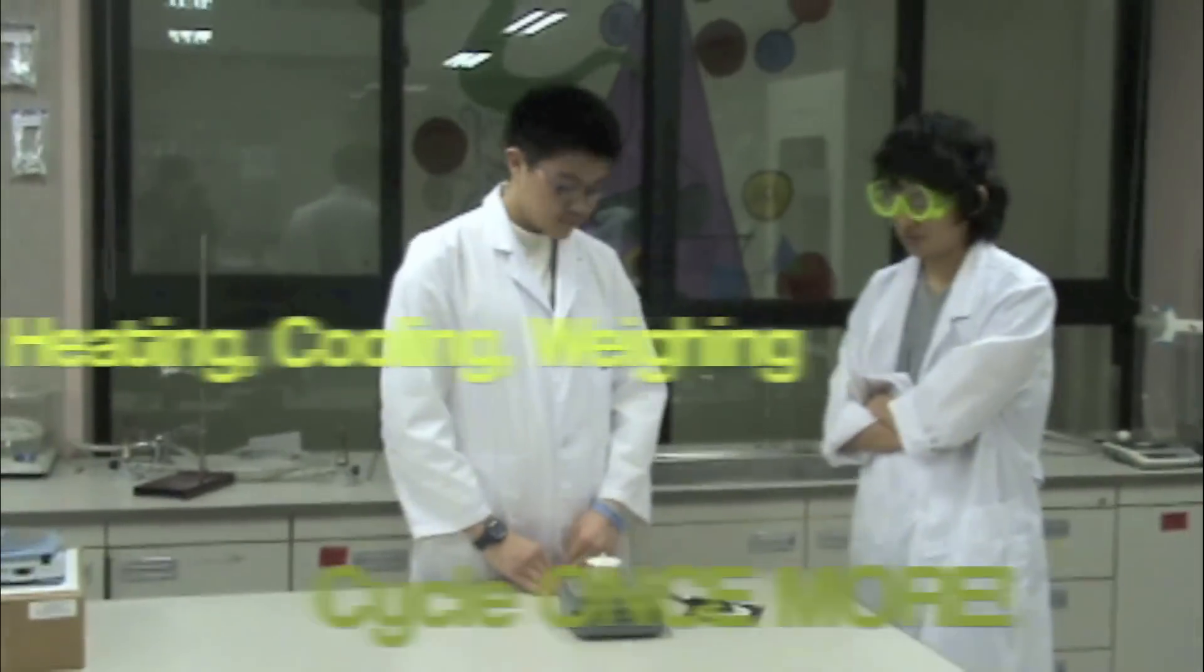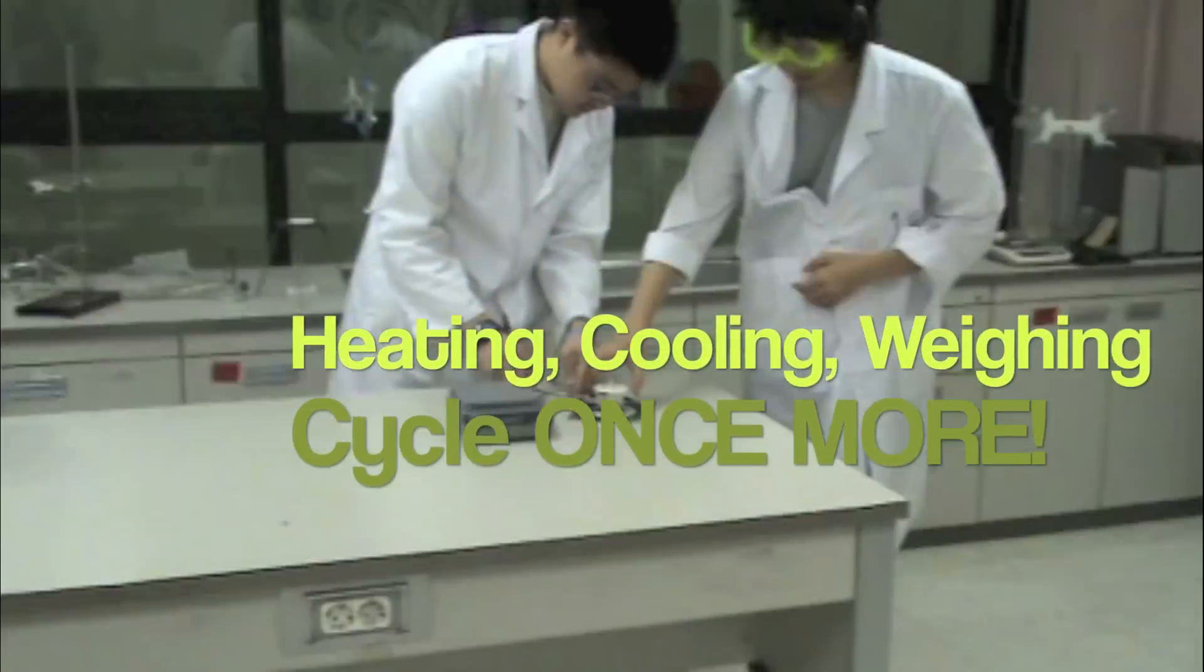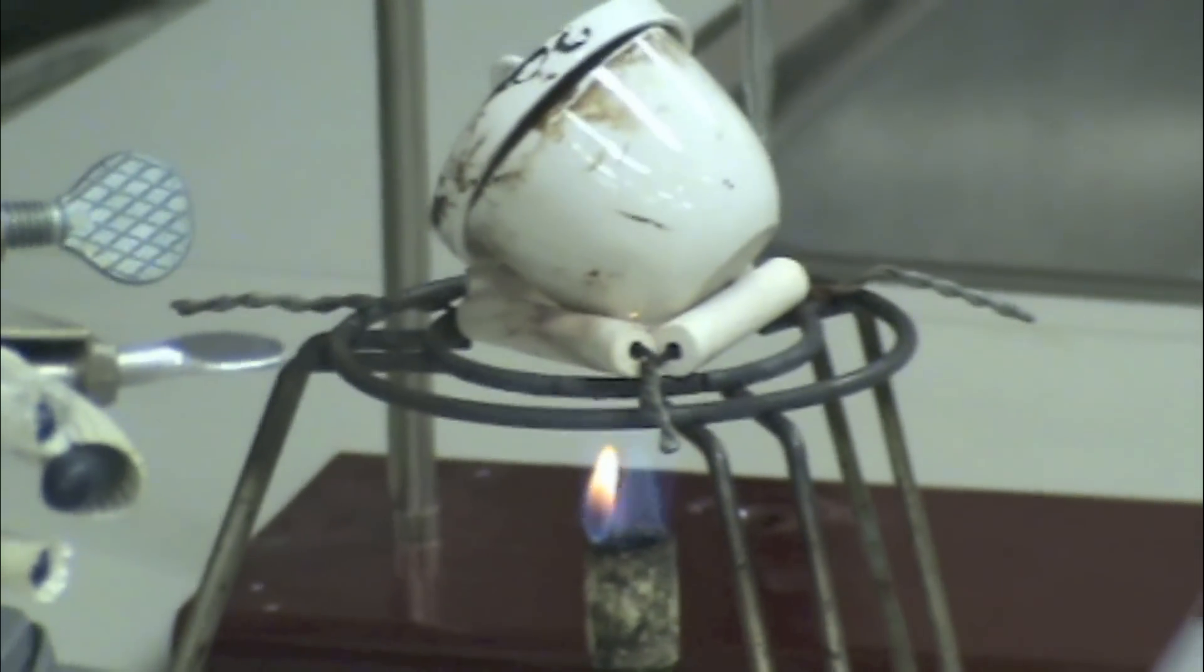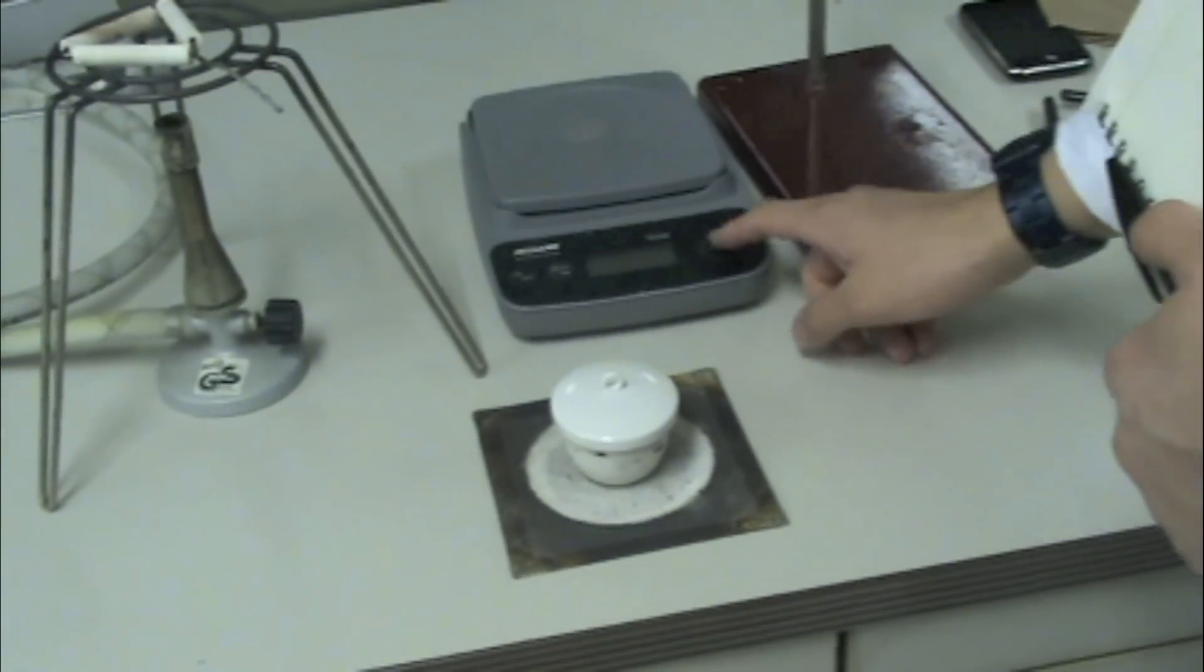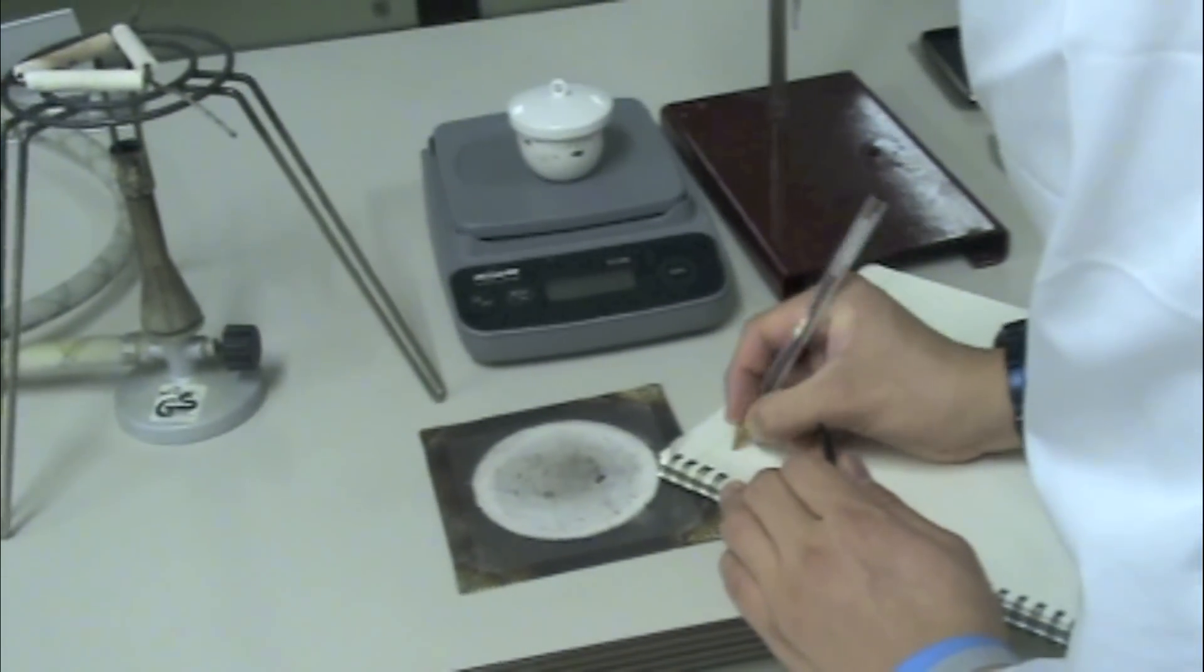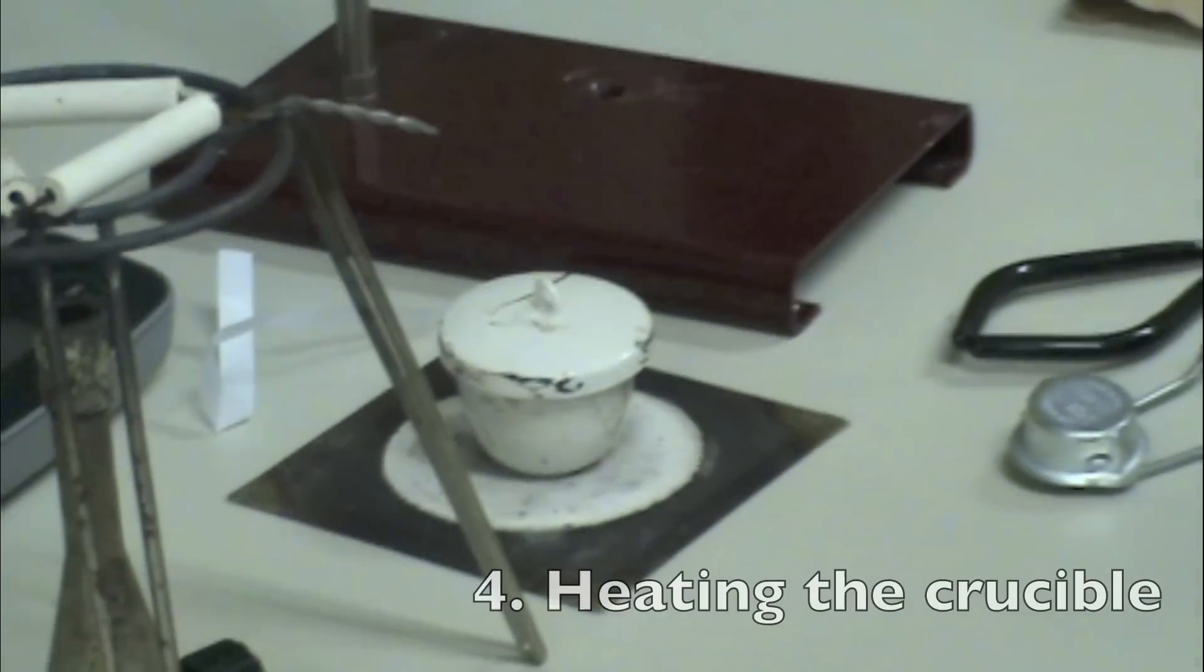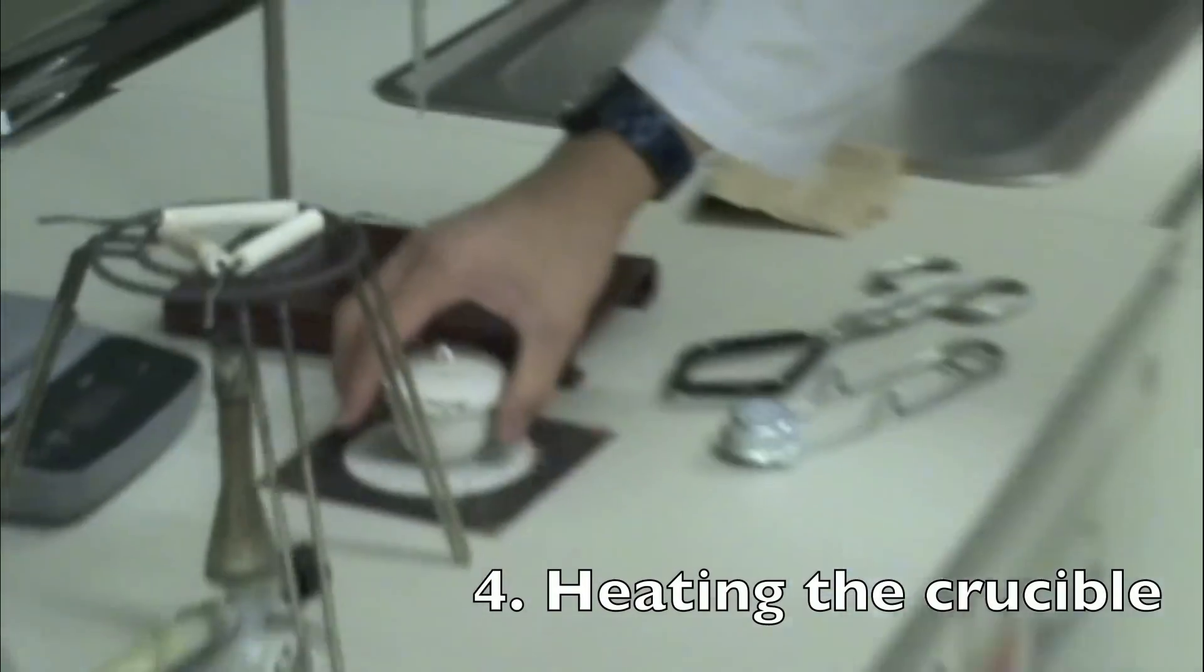Now, perform the heating, cooling, and weighing cycle once more, and compare the two weight measurements. If the two weight measurements are equal, you are good to go. Place the sample you want to heat inside the crucible and weigh the crucible, lid, and the sample together to get the total weight. Now it's time to do the actual experiment.